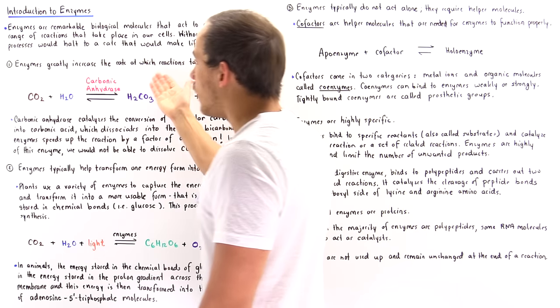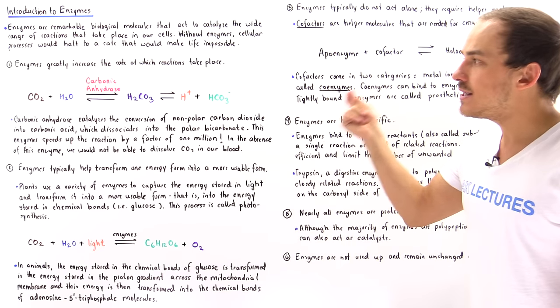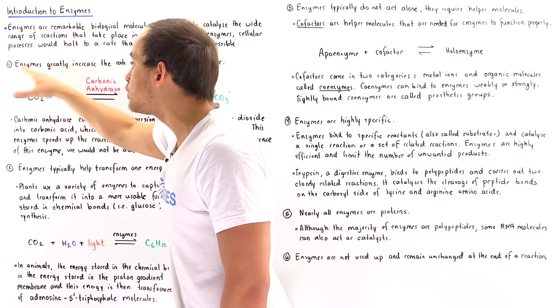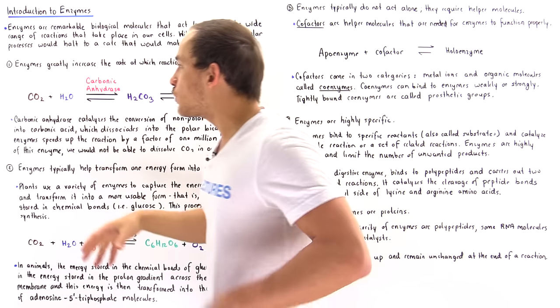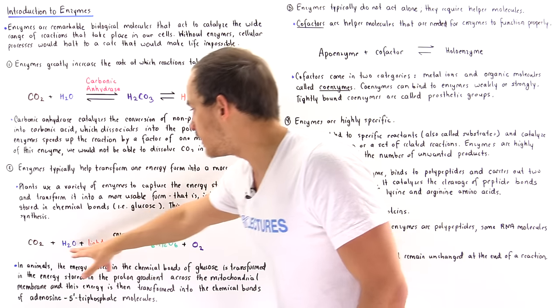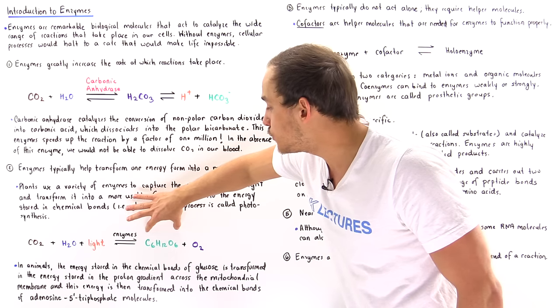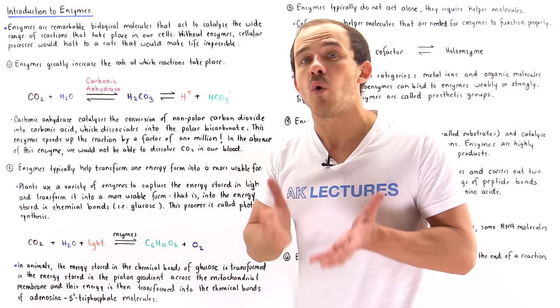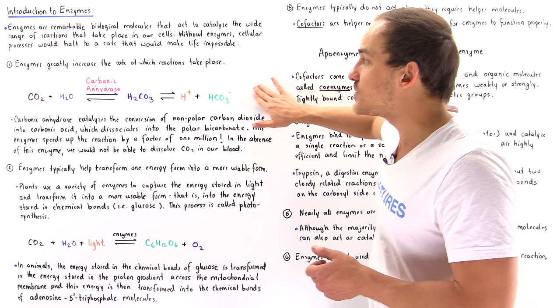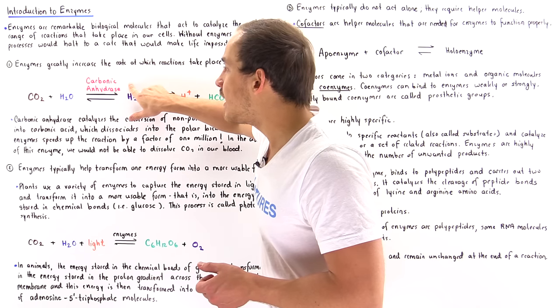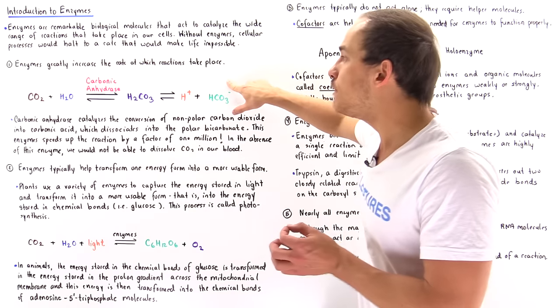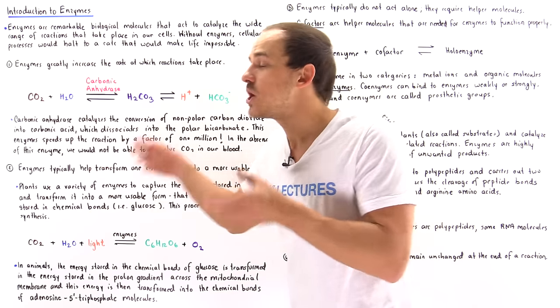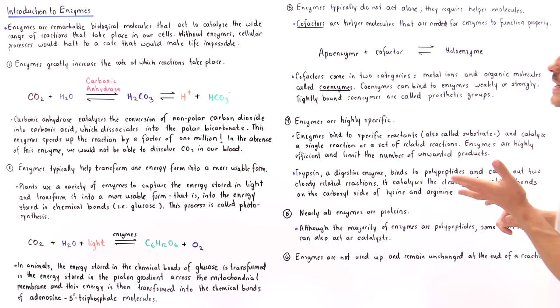So for example in the case of carbonic anhydrase, carbonic anhydrase binds the CO2 and the water, and the CO2 is the substrate. Now CO2 can react with water in many different ways, for example we can produce sugar molecules and oxygen molecules, and these are unwanted products at least in this particular case. So what carbonic anhydrase does is it ensures that we form only a single type of product, we do not form any unwanted products in our reaction. So enzymes are highly specific.